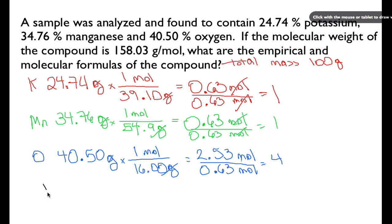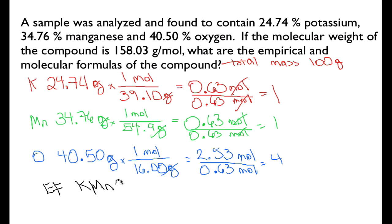That ratio gives us our empirical formula. The empirical formula is KMnO₄ — one potassium, one manganese, and four oxygens.